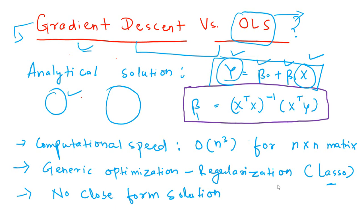You can see you need matrix inversion here and that takes quite a lot of computational power. So your computational speed will get affected if the number of features available to you is quite high.